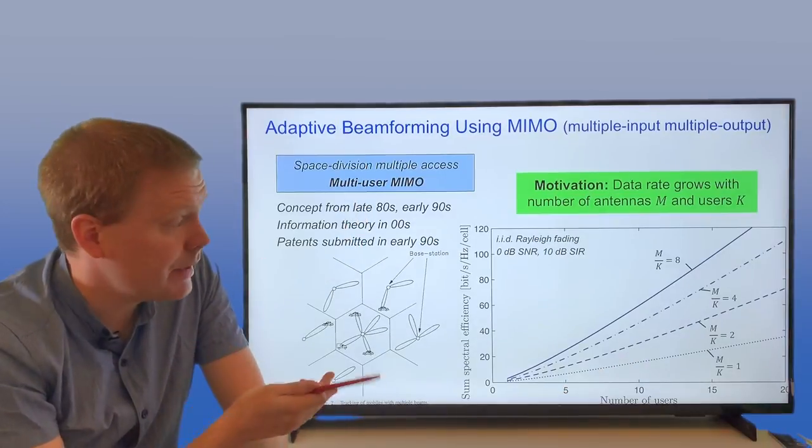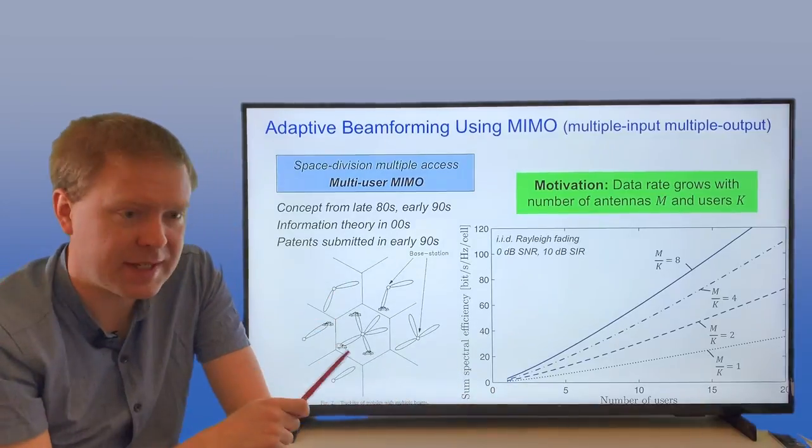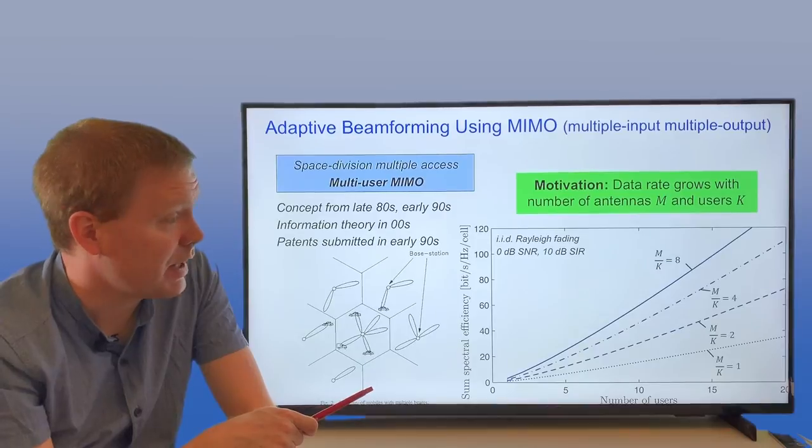You see that even if all of these curves are growing with number of users, when you have many more antennas than users, you also see a bigger benefit of having multiple users and antennas in the system.